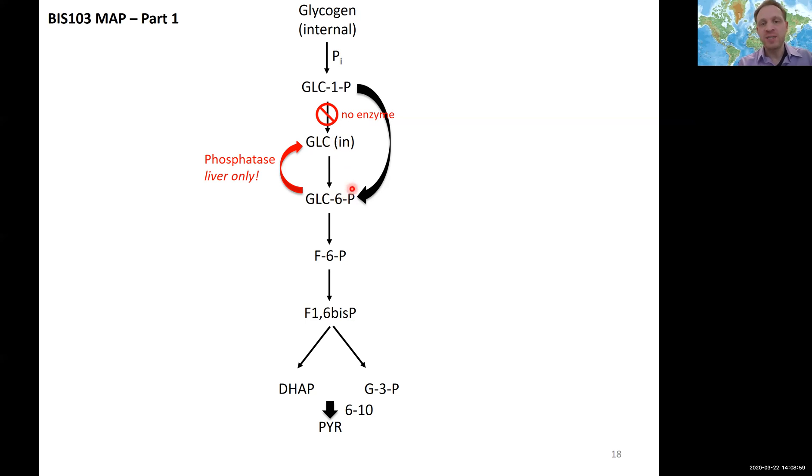And so this can dephosphorylate glucose 6-phosphate going back to glucose. Now we have free glucose that can actually be released from the liver into the bloodstream and we're all good - the liver can do its job. Okay, but so this is a very specific phosphatase that exists only in the liver that can do this reaction, bypassing this irreversible phosphorylation reaction from glucose to glucose 6-phosphate.